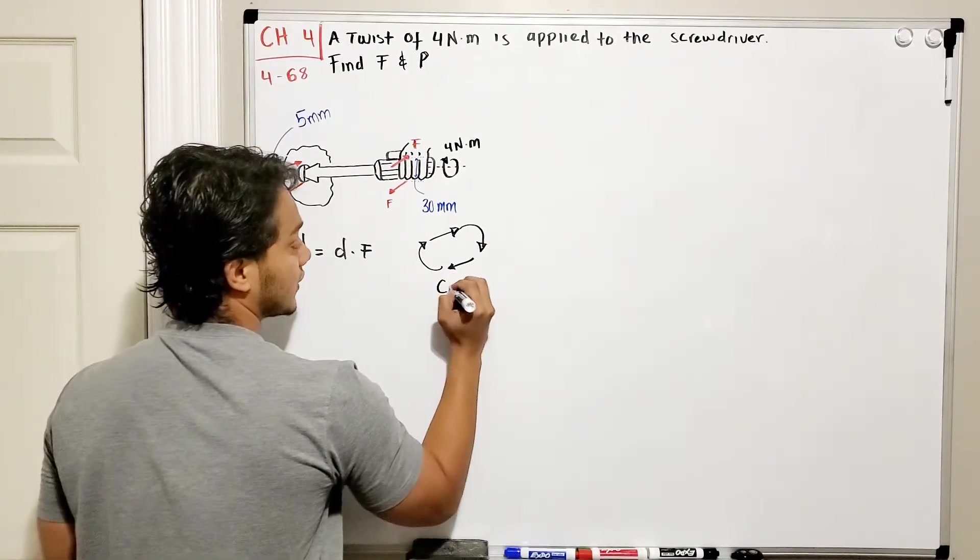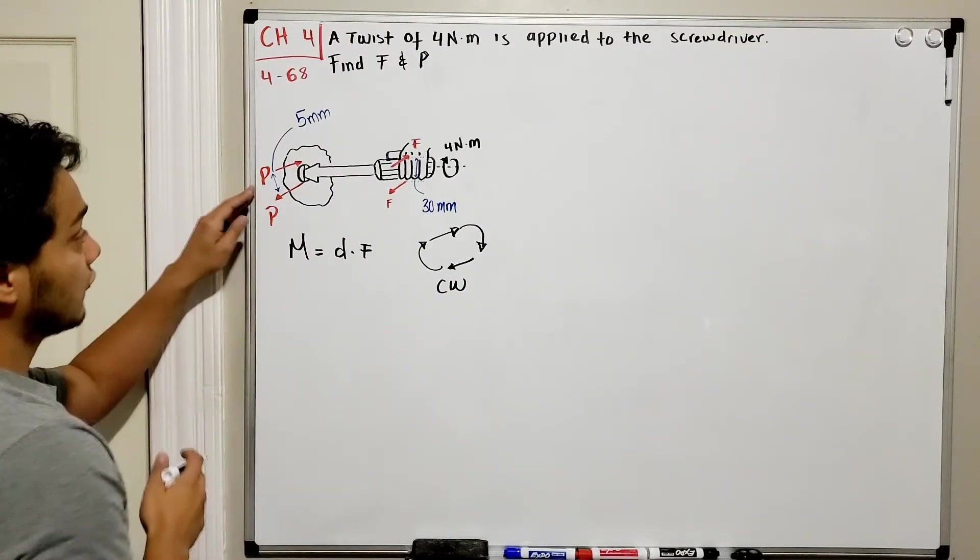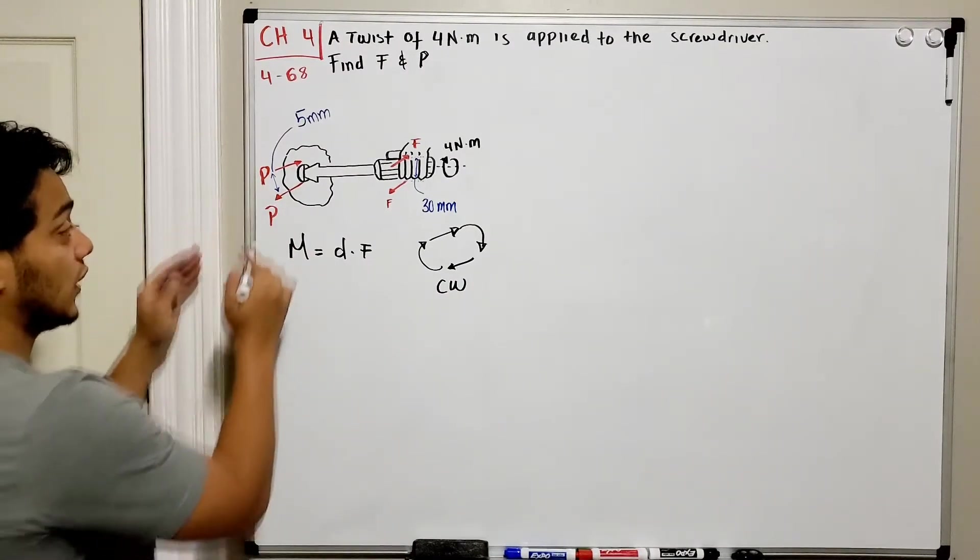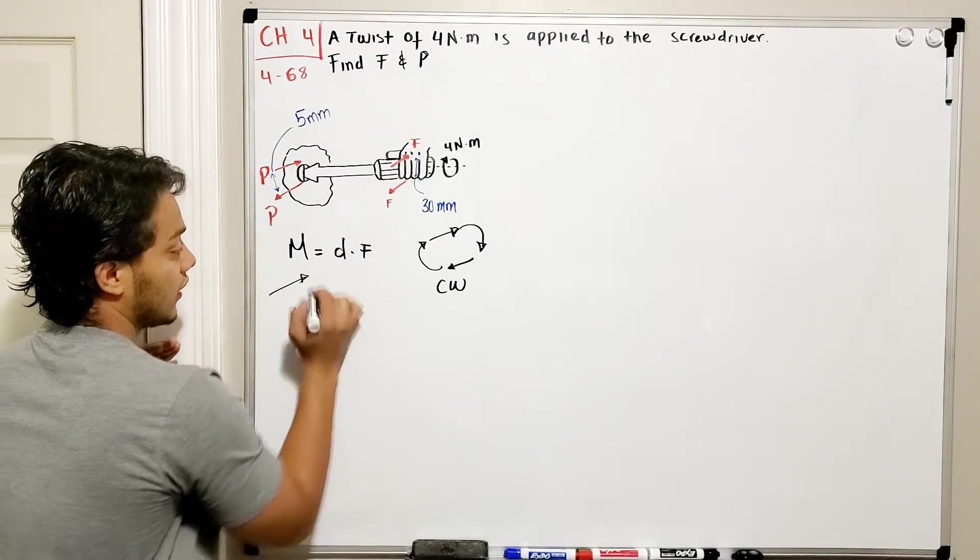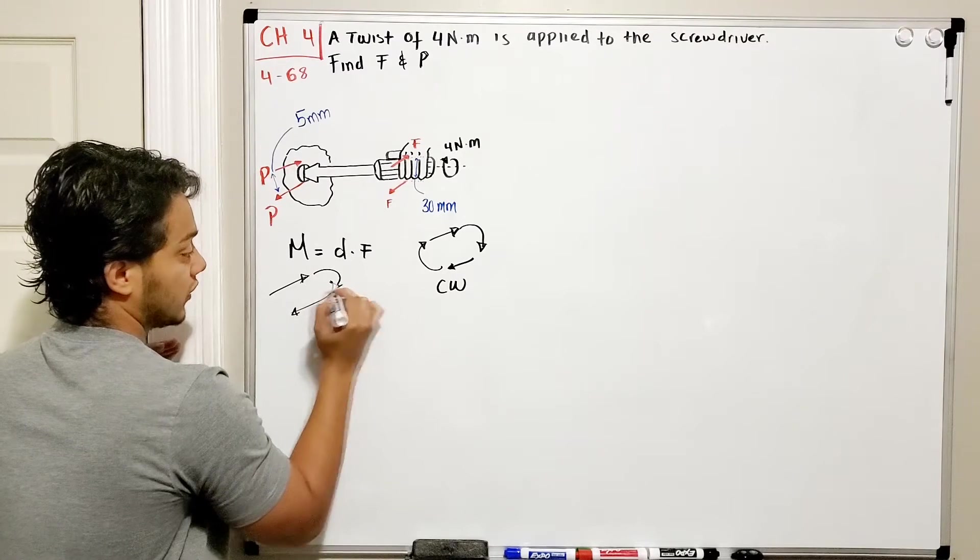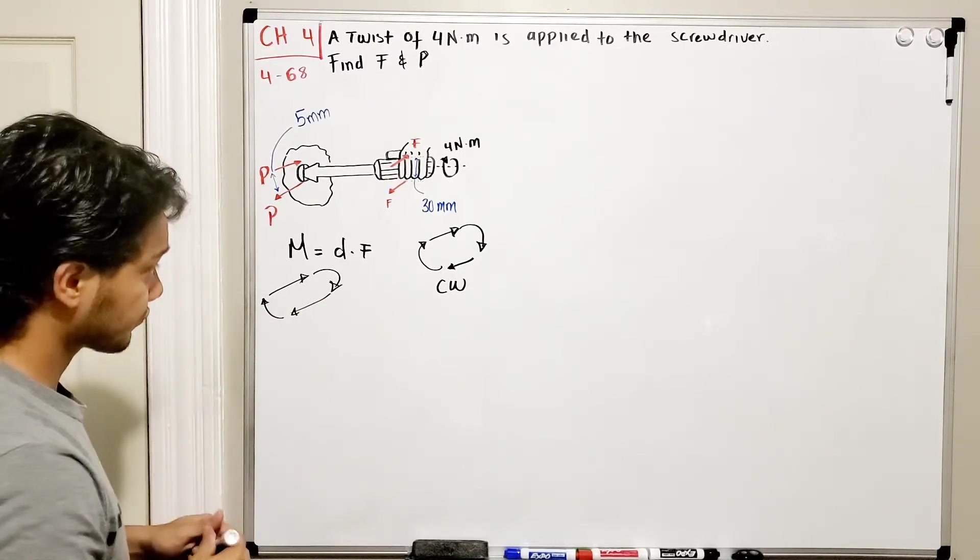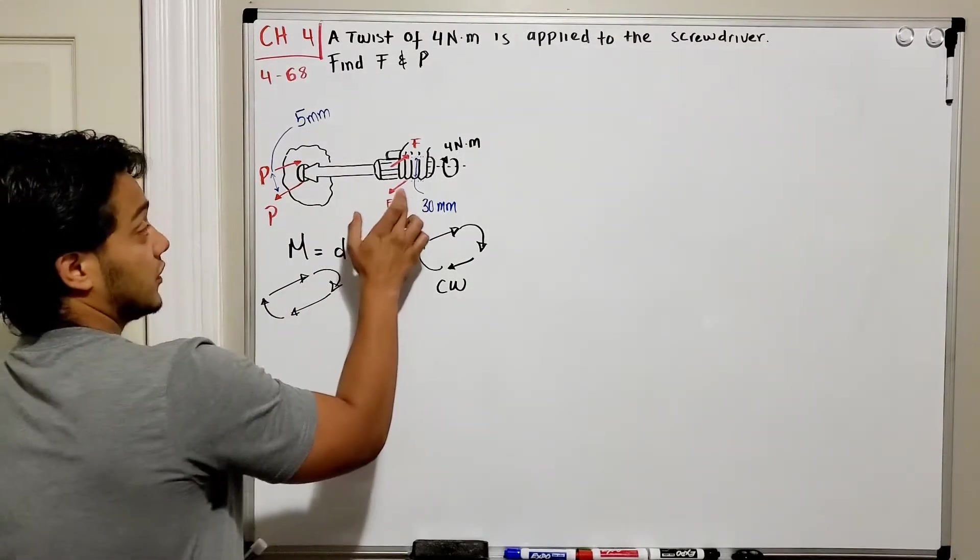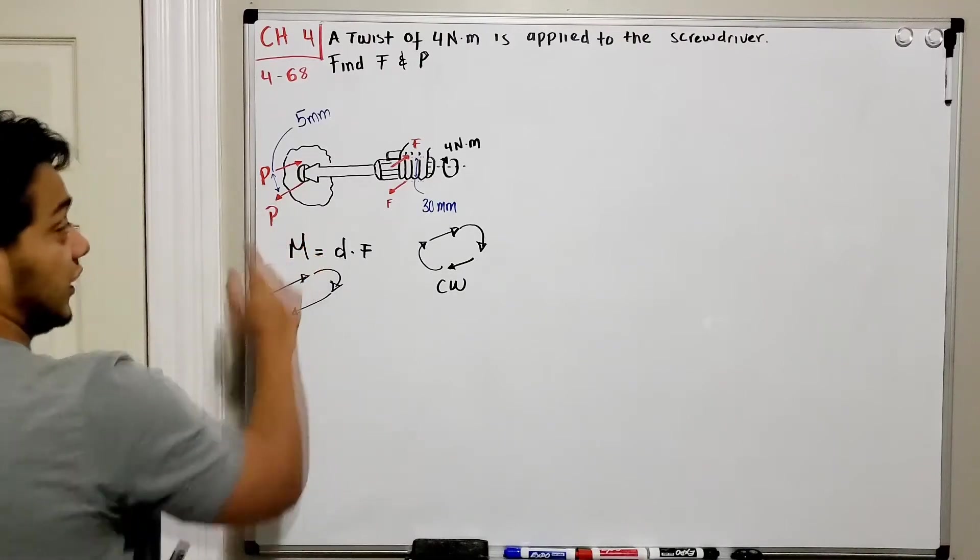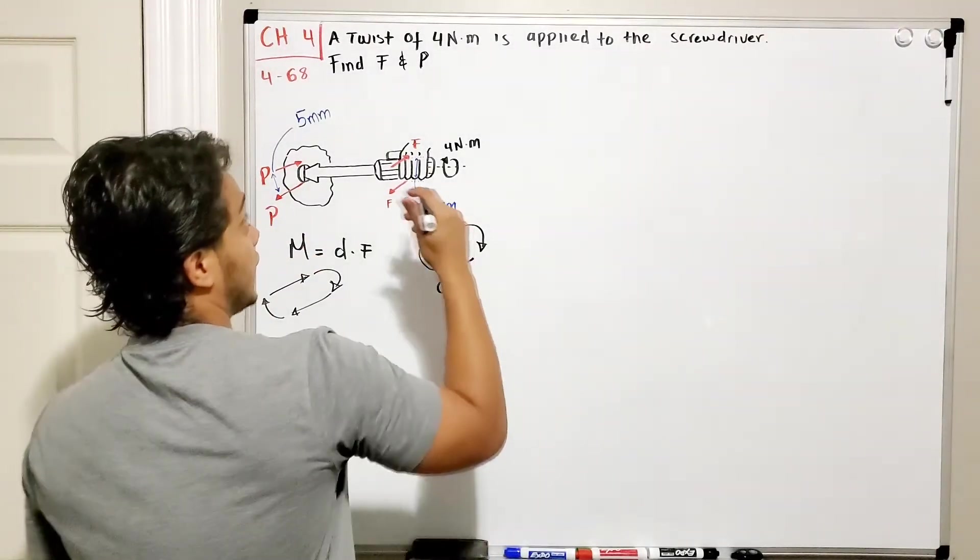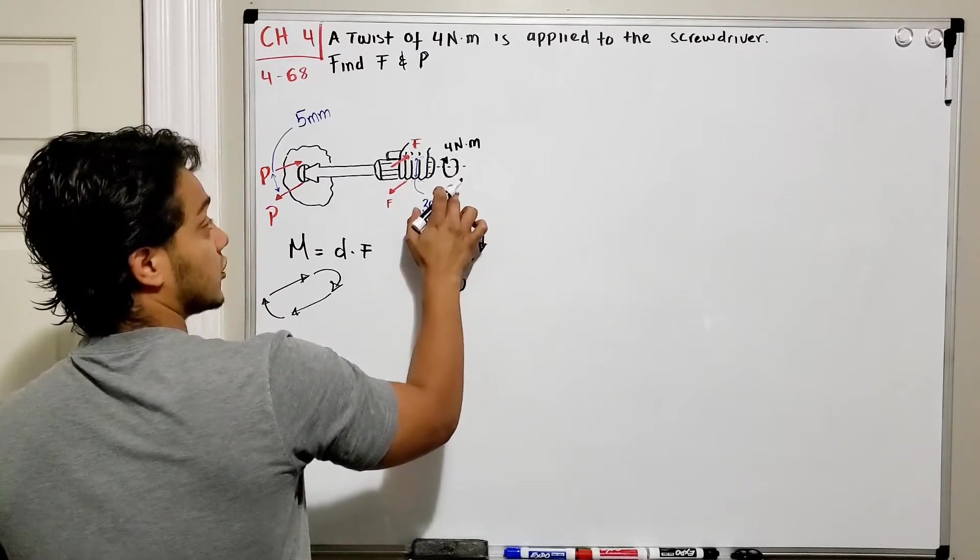Same for our force P. We have a force going that way, a force coming this way, and our moment will be in the clockwise position. Now we need to find what this force F is and what this force P is, but they're giving us that the moment that is the result of these forces is 4 newton-meters.